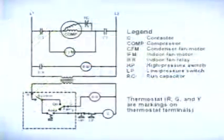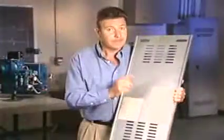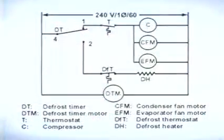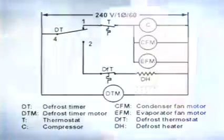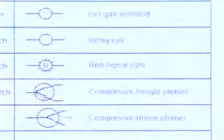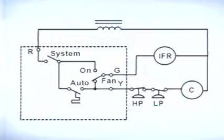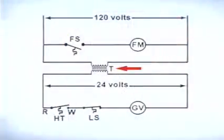Common types of wiring diagrams are the schematic and pictorial. The schematic diagram is the most useful and easiest to follow, telling the technician how and why the system operates. The pictorial diagram is primarily used to locate components in a control panel. Technicians should be familiar with the symbols commonly found in wiring diagrams. Loads in parallel circuits operate independently of each other, and switches wired in series with the loads control their operation. Low-voltage control circuits are often used to control line voltage components, with transformers supplying the low voltage.